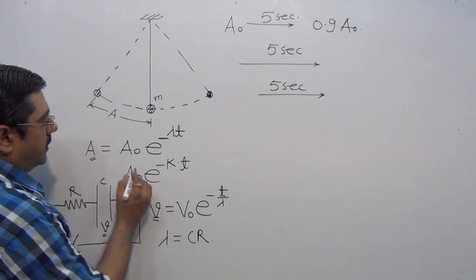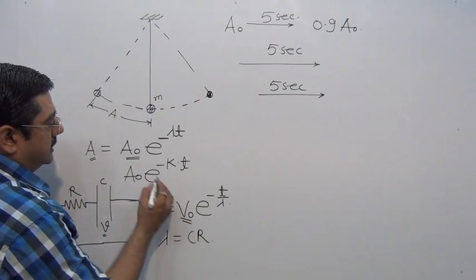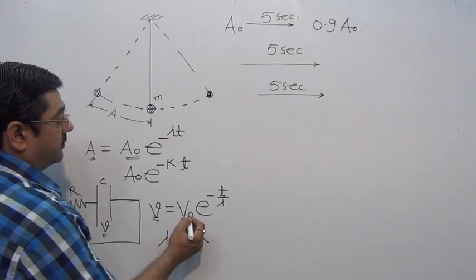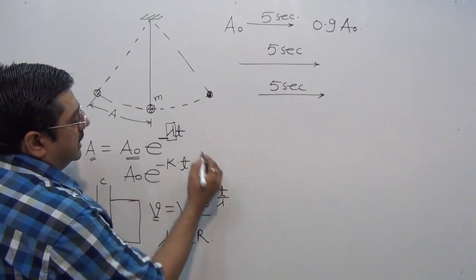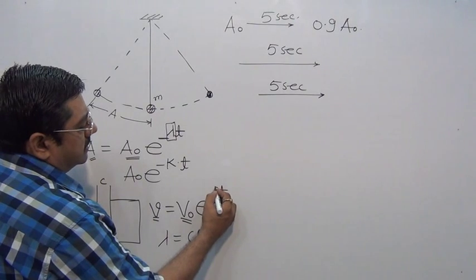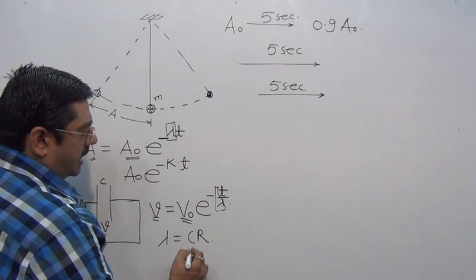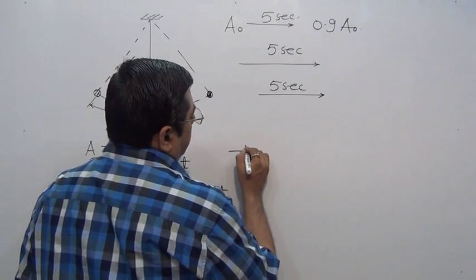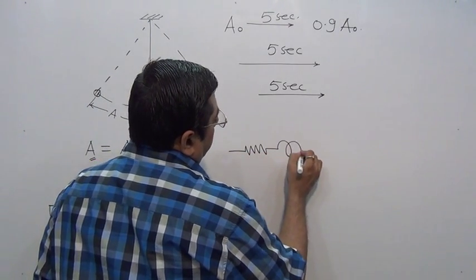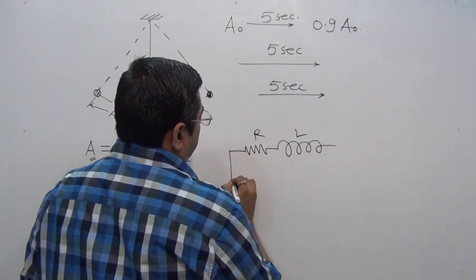The format is the same: instantaneous value equals maximum value times e^(-λ). This is amplitude, this is maximum voltage. Here 1/λ is some constant; here λ is called C·R, which gives seconds.